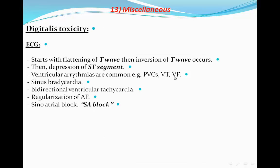In severe cases of digitalis toxicity, VF can occur. Sinus bradycardia can also happen. Bi-directional ventricular tachycardia — where the axis alternates positive and negative — is a classic sign of digitalis toxicity. Regularization of atrial fibrillation is another sign: if you find a patient without P waves but with a regular rhythm, this indicates complete heart block in the presence of atrial fibrillation, which is digitalis toxicity.